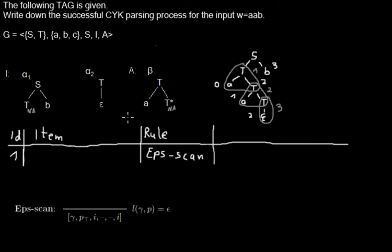The example looks very similar to the previous one. The rule here says we can apply the Epsilon scan without any previous items in the chart, or we don't need any items for that.